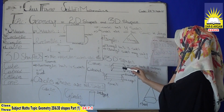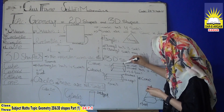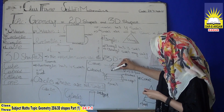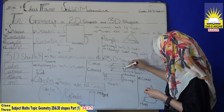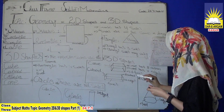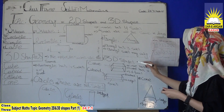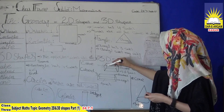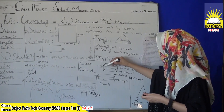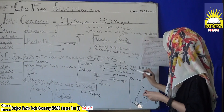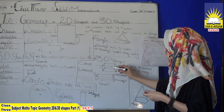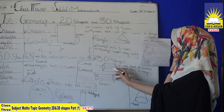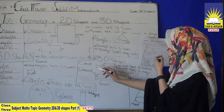The cube has 8 corners: 1, 2, 3, 4, 5, 6, 7, and 8. Next, 12 edges: 1, 2, 3, 4, 5, 6, 7, 8, 9, and up to 12. And 6 faces: 1, 2, 3, 4, 5, and 6. This is called a cube.